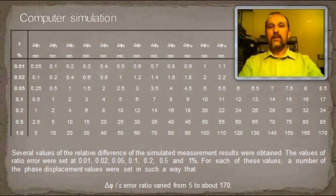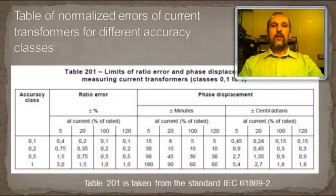It should be noted that for a rated current of 1A that is 100% in the table, the value of the phase displacement should not exceed 30 minutes for class 0.5. However, for the rated current of 5A, the ratios analyzed in the work and presented in the table correspond to 20% of the rated current. I remind you, the calculation was performed at a current of 1A.